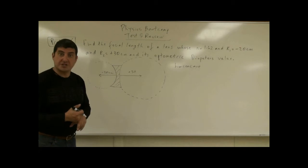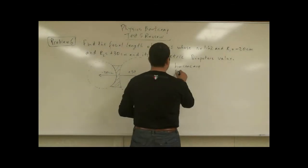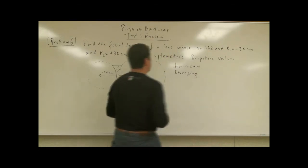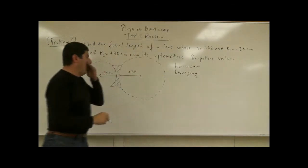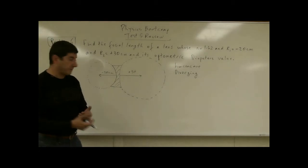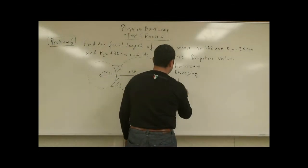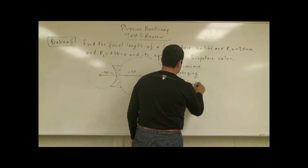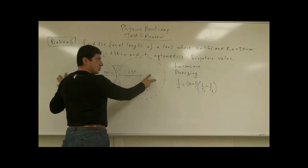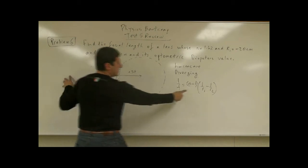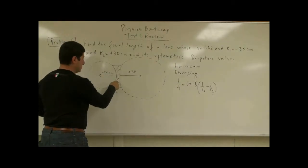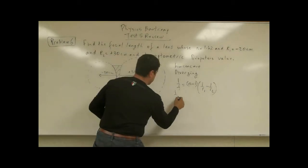A biconcave lens would be an excellent fit for someone who is nearsighted — the middle is thinner than the outer edges. It would also be called a diverging lens. So what would its focal length be? It should be negative.